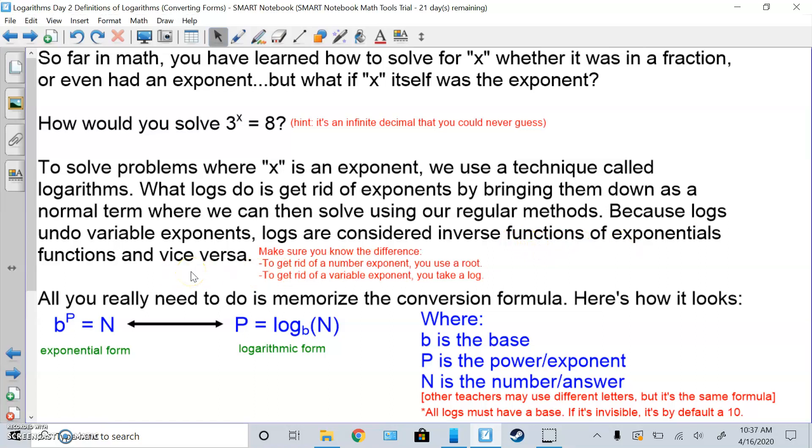Logs are considered inverse functions of exponential functions and vice versa. So they're opposites where they undo each other, just like multiplication and division are opposites, adding subtraction are opposites. Now make sure you know the difference. To get rid of a number exponent, for example, a square power, you take a root, use a square root. But to get rid of a variable exponent, x power, you cannot do an x root, you have to take a log.